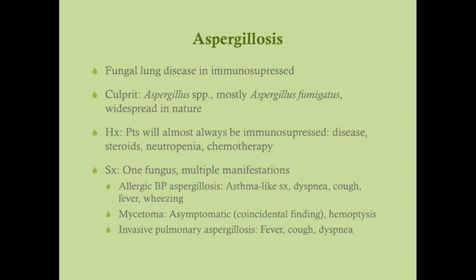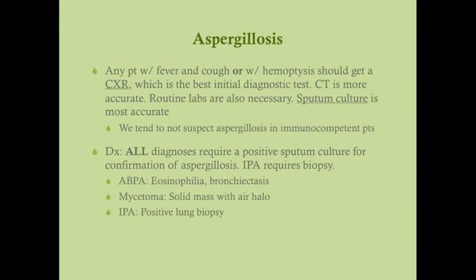Invasive pulmonary aspergillosis is the most severe presentation. It primarily presents as fever, cough, and dyspnea that progressively worsens, with respiratory compromise. Any patient with fever and cough or hemoptysis should get a chest x-ray. The best initial diagnostic test for suspected aspergillosis is a chest x-ray, but a CT scan is more accurate.